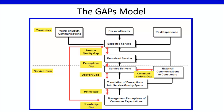GAP 5: The Perceptions Gap. The Perceptions Gap is the difference between what is actually delivered and what customers feel they have received, because they are unable to accurately judge service quality.